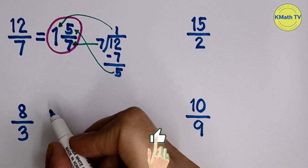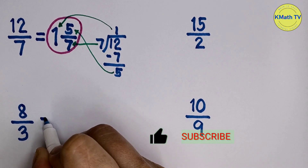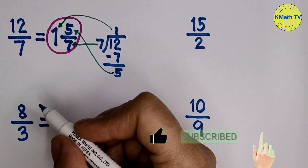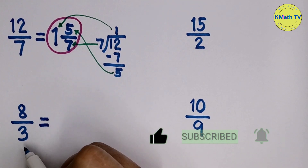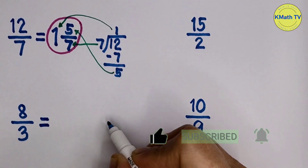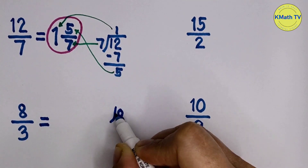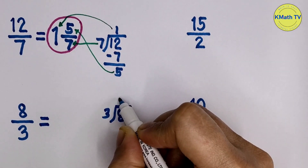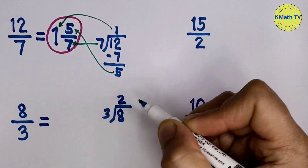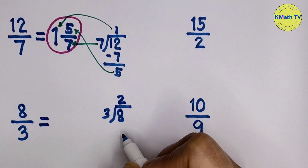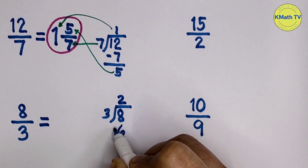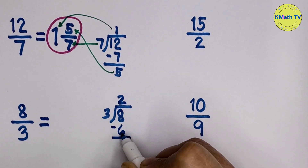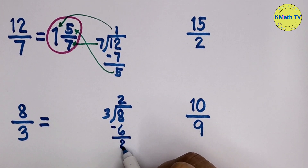Another example — let's change 8 thirds to a mixed fraction. Let's divide the numerator 8 by the denominator 3. 8 divided by 3 equals 2. 2 times 3 equals 6. Then subtract. 8 minus 6 equals 2.